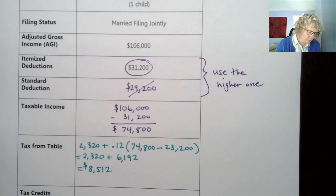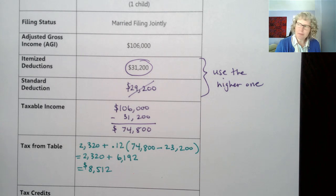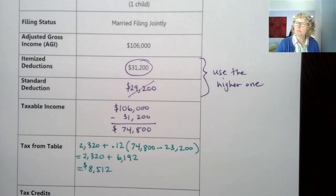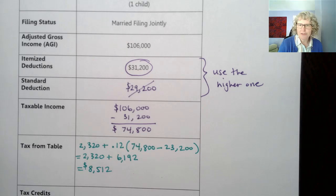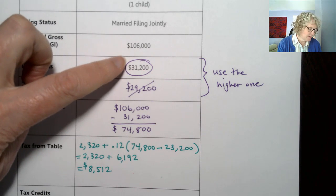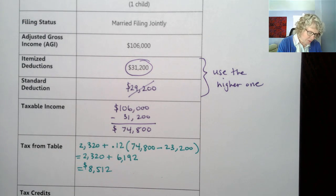I paused to double-check because I got a different answer last time, but this is right — I had just changed a number and made it bigger, which is why the answer changed. Just wanted to make sure I don't give you the wrong answers.